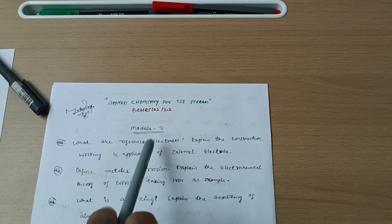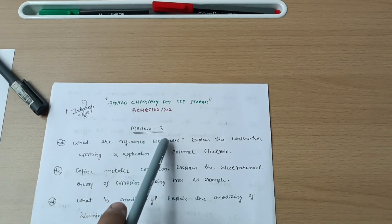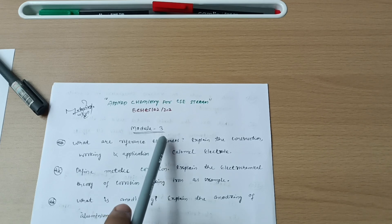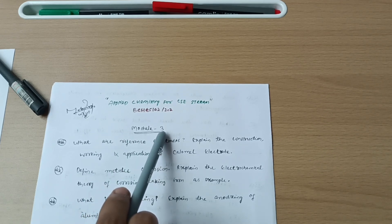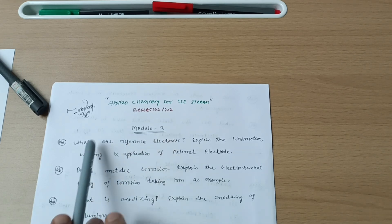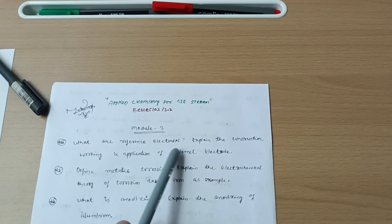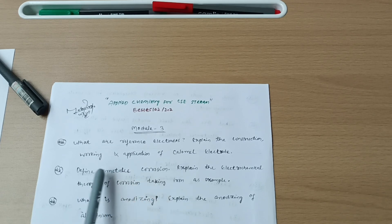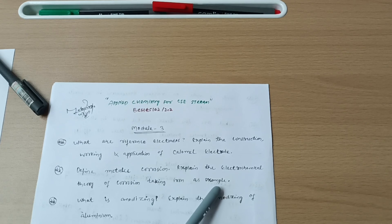Let me discuss some important questions for this particular subject. Module 3 you have to cover, this is the simpler module comparatively to the others. What are reference electrodes? Explain the construction, working, and application of calomel electrode. This is a super important question. Next, define metallic corrosion or simply they will ask you to define corrosion. Explain the electrochemical theory of corrosion taking iron as an example. This may be a seven marks question definitely.